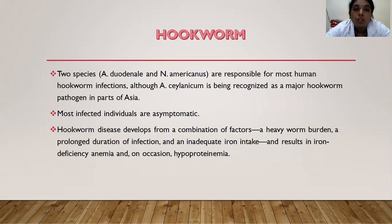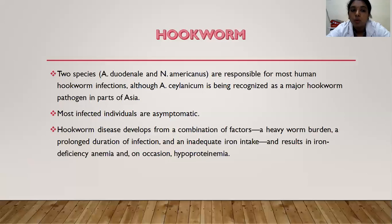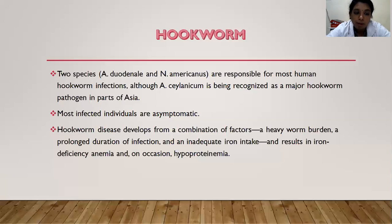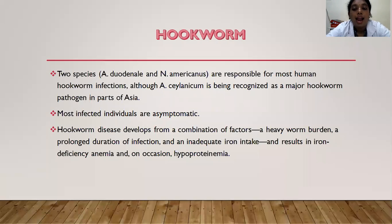Coming to hookworm — the third important nematode. The two species responsible for most human hookworm infections are Ancylostoma duodenale and Necator americanus. There are others like Ancylostoma ceylanicum, recognized as a major hookworm pathogen in parts of Asia. Most infected individuals are asymptomatic. Hookworm disease develops from a combination of factors: a heavy worm burden, a prolonged duration of infection, and an inadequate iron intake, resulting in iron deficiency anemia and on occasion hypoproteinemia.